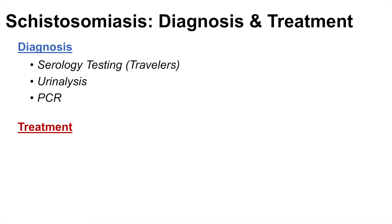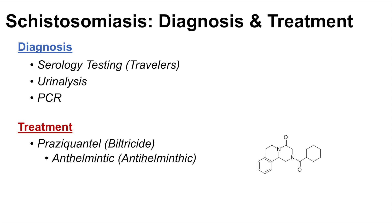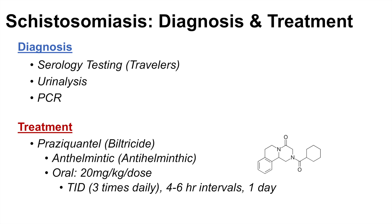Once we have determined it is a schistosoma infection, the treatment is praziquantel, also known as biltricide. Praziquantel is an antihelminthic — a drug that kills these parasitic worms. A dose of typically 20 milligrams per kilogram is given three times daily at four to six hour intervals for one day. That is the treatment for schistosomiasis.